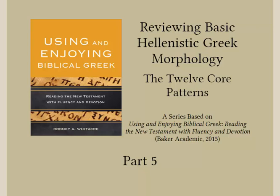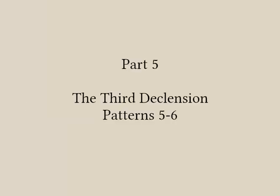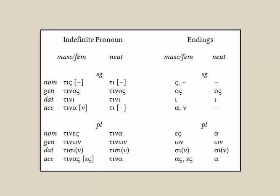Welcome to the fifth video in this review of basic Greek morphology based on 12 core patterns. We now conclude our review of 3rd declension nouns. Pattern 5 presents us with the most complex set of 3rd declension patterns, and pattern 6 has the easiest. We don't have any new endings — these final two patterns continue to use the same core pattern as the first four patterns of the 3rd declension.